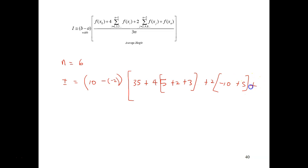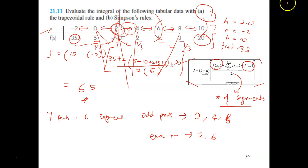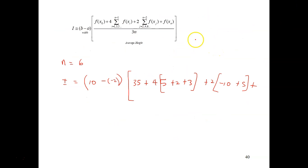And then plus the last point, which is 20, this one. Twenty divided by three N. N is the number of segments, which is six. And solving this, you will get the answer as 56.6667. There you go.